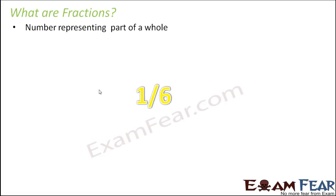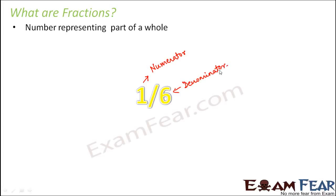Let us look at examples. 1 by 6 is an example of a fraction. Whenever you look at any fraction, you see that it has a number divided by another number. The number on the top is called the numerator and the number which is down is the denominator. A good way to remember: d for down, d for denominator. So the upper number is numerator and the lower number is denominator.